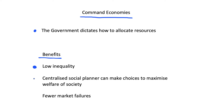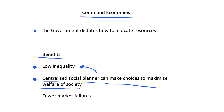This low inequality links into the second point: because we have a centralised commanding social planner, they can make choices to maximise the welfare of society as a whole. These choices will tend to lead to low inequality because in a command economy, inequality is viewed as a bad thing. As we look more deeply into economics, we will see from diminishing returns to utility that a social planner will want to reduce inequality where possible.